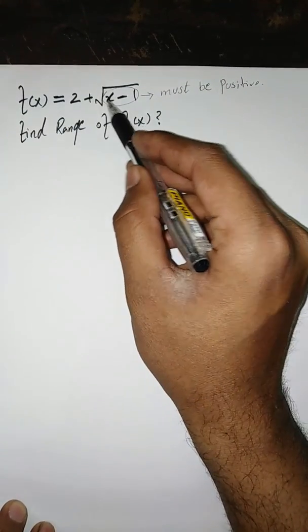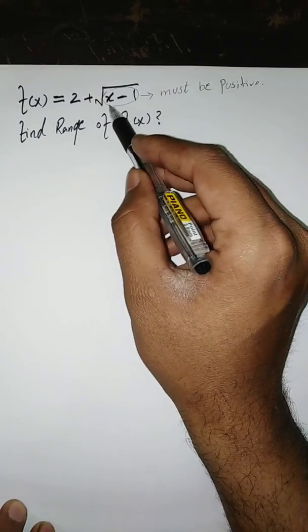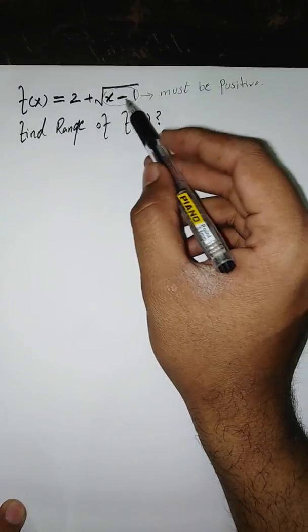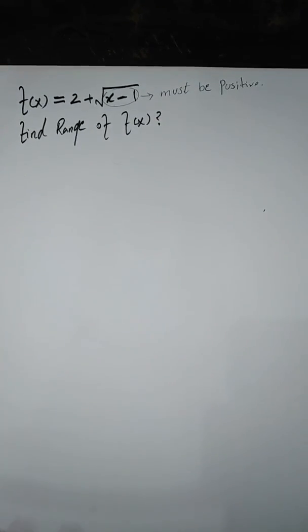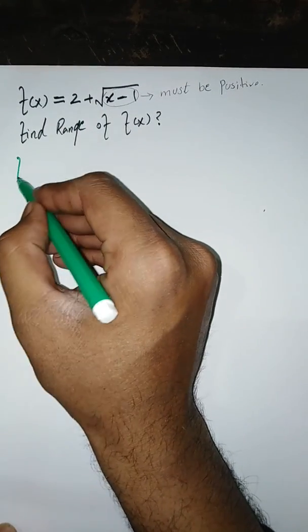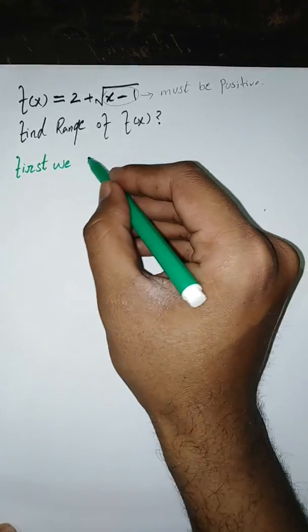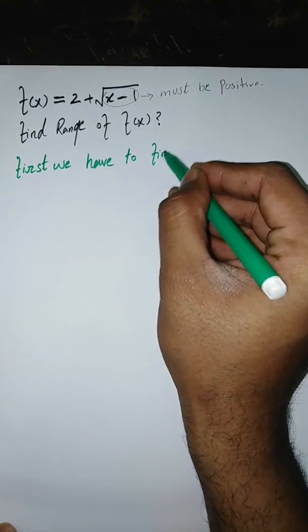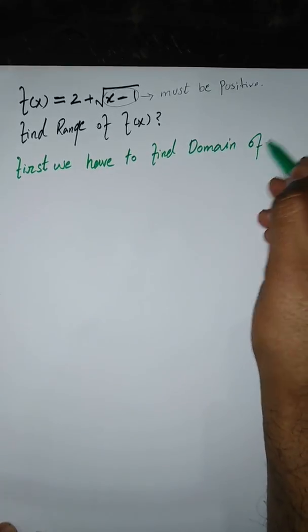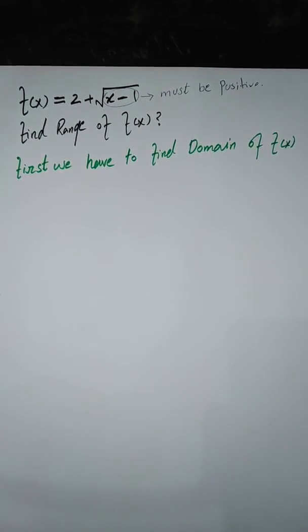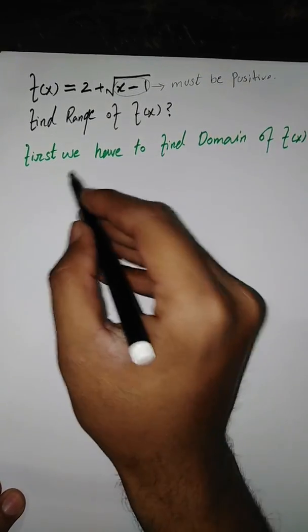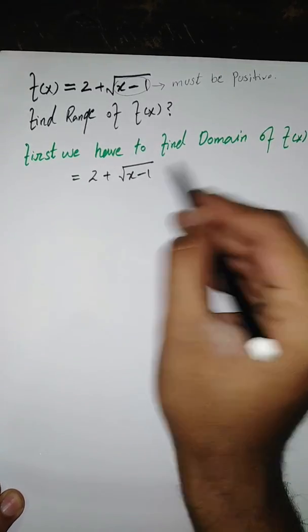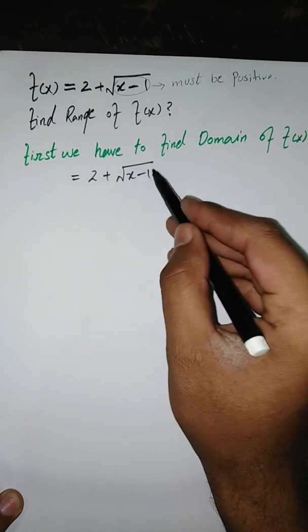As I already explained, whenever a radical sign appears in our function, the term under the radical sign must be positive — it must be greater than or equal to zero. Whenever we find the domain of a function and a radical term appears in our expression, the term under the radical sign must be greater than or equal to zero.